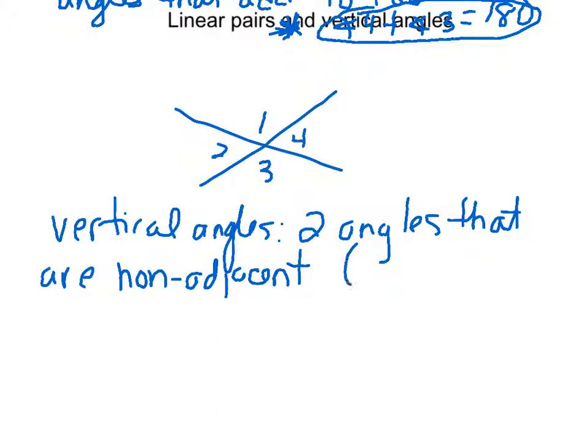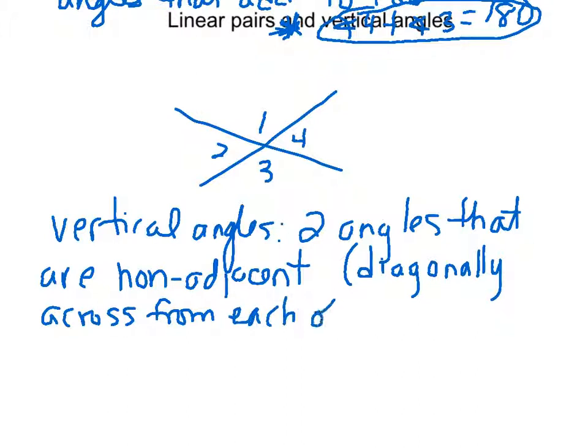And I like to think of it more informally as they're diagonally across from each other. So put that in your notes. So if I'm talking about angle one, it is vertical angles to angle three. So angle one and angle three are vertical angles.